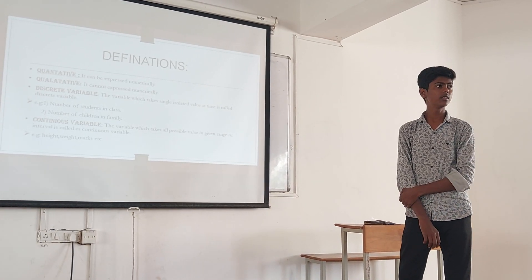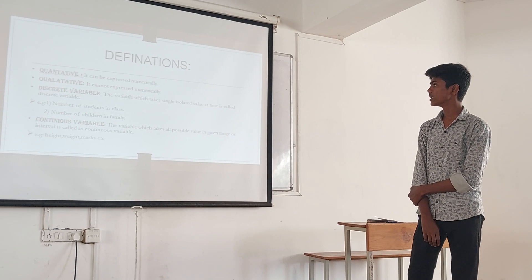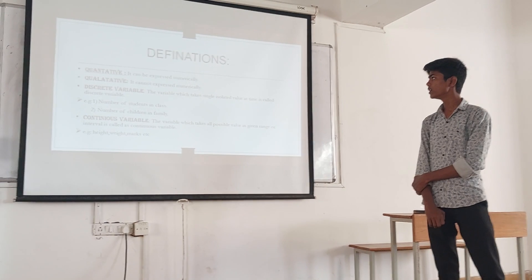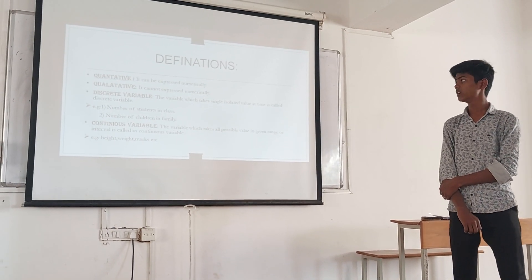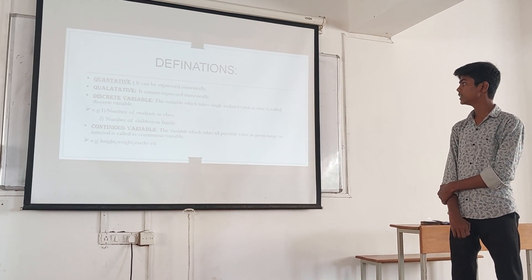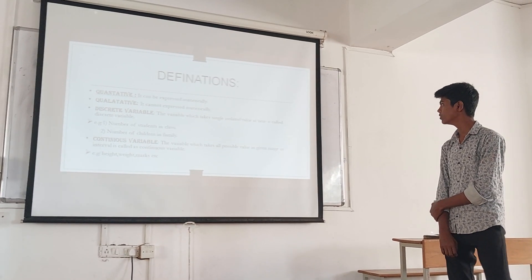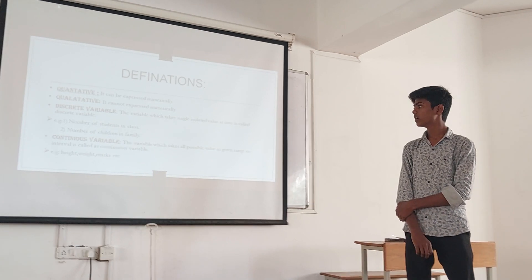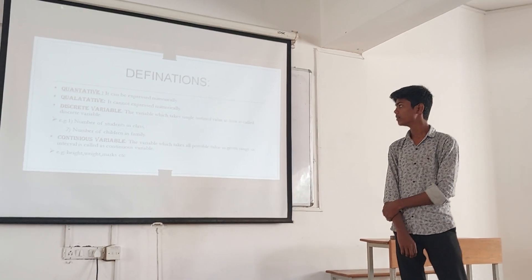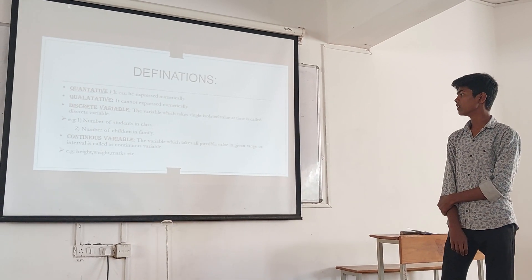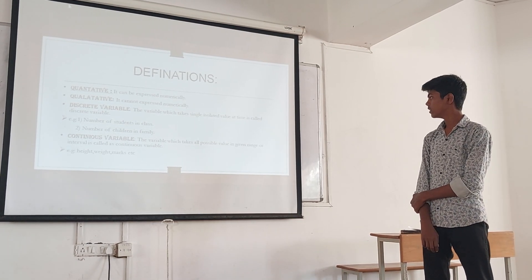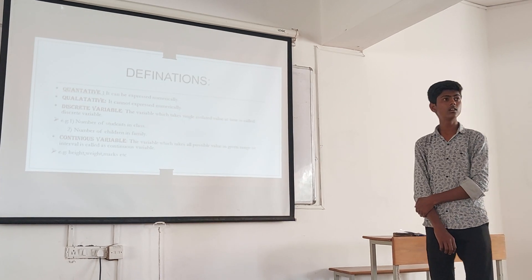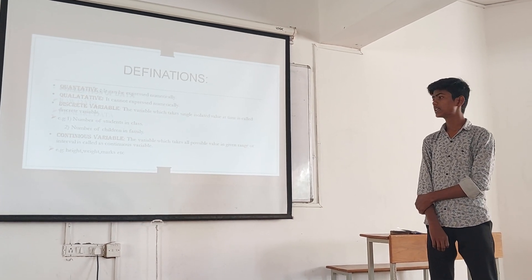A quantitative variable can be expressed in numerical data. A qualitative variable cannot be expressed in numerical data. A discrete variable is the variable which takes a single isolated value at a time — for example, number of students in a class or number of students in a family. A continuous variable is the variable which takes all possible values in a given range or interval — for example, height.